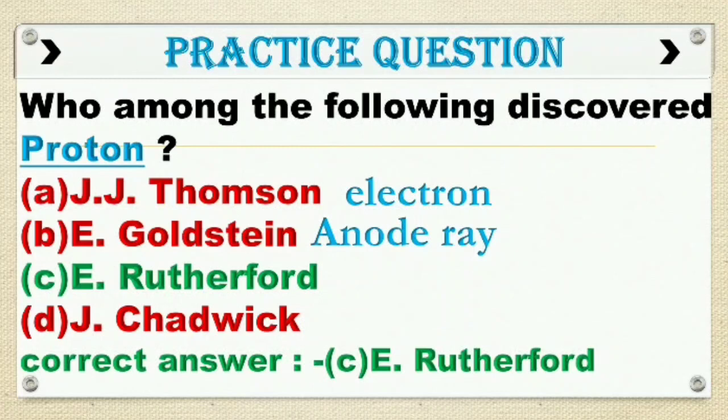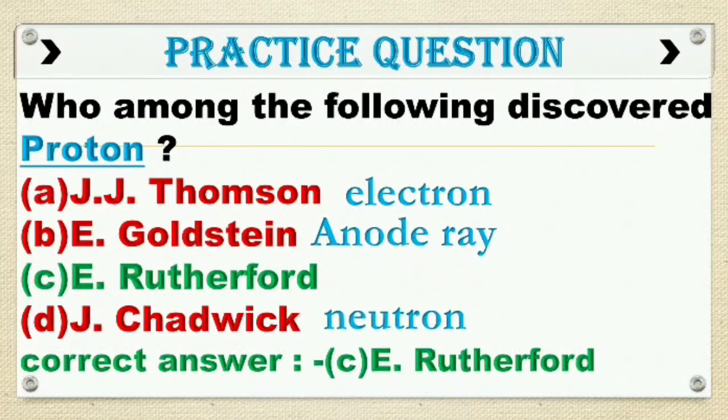D. J. Chadwick discovered the neutron in 1932 by bombarding beryllium with alpha particles.